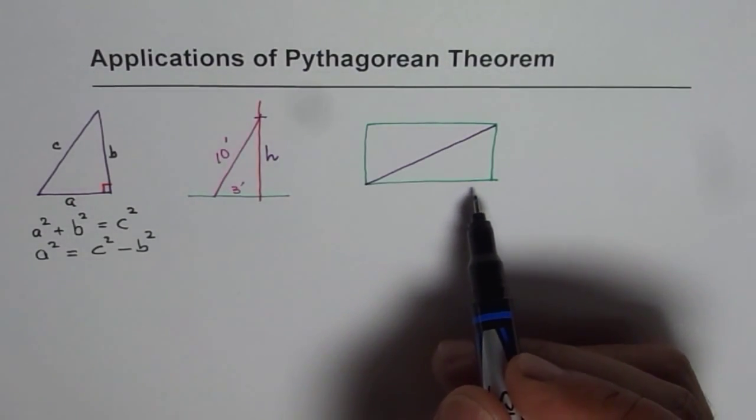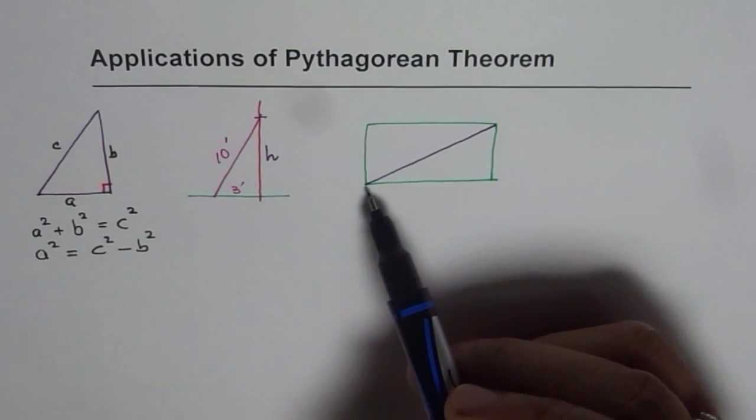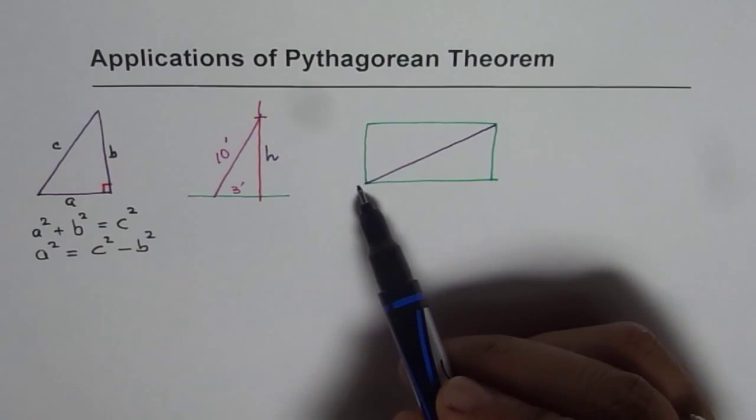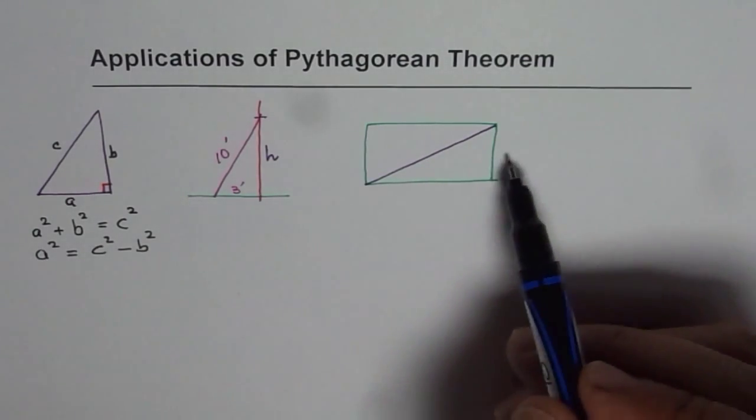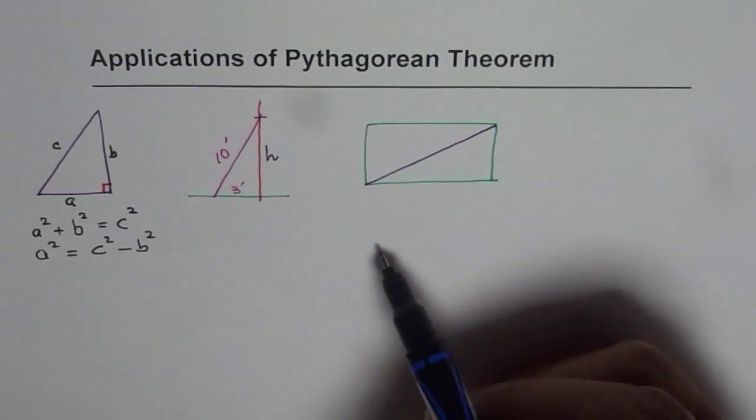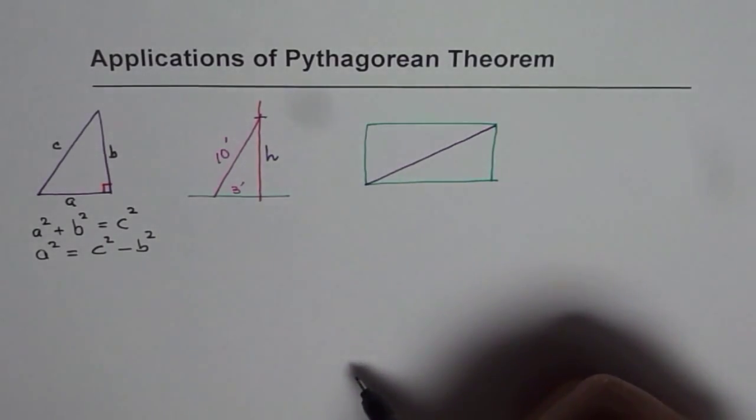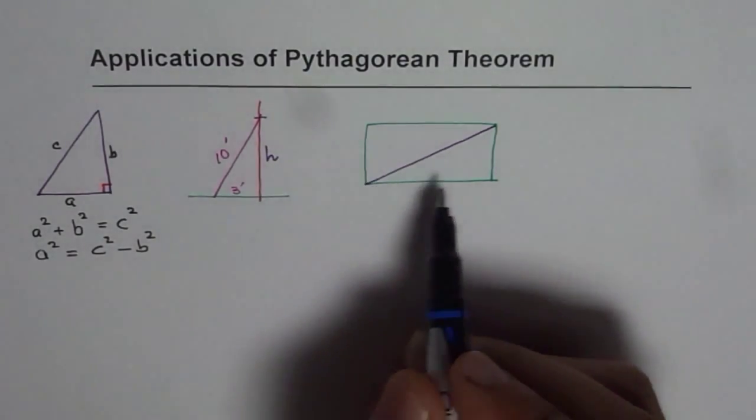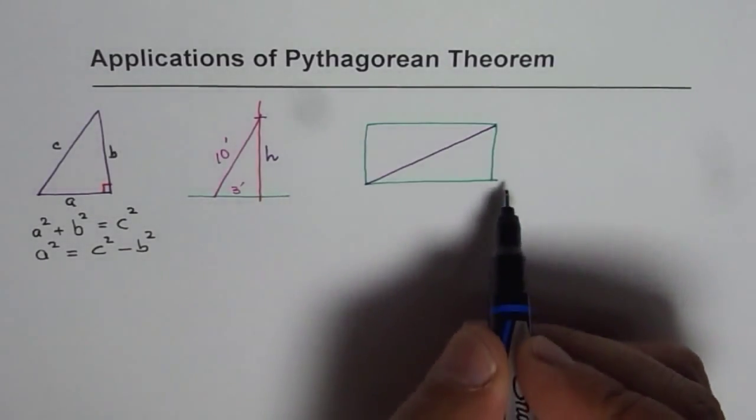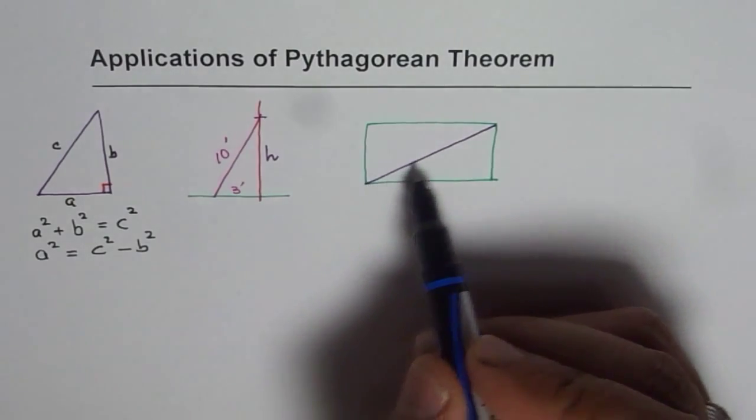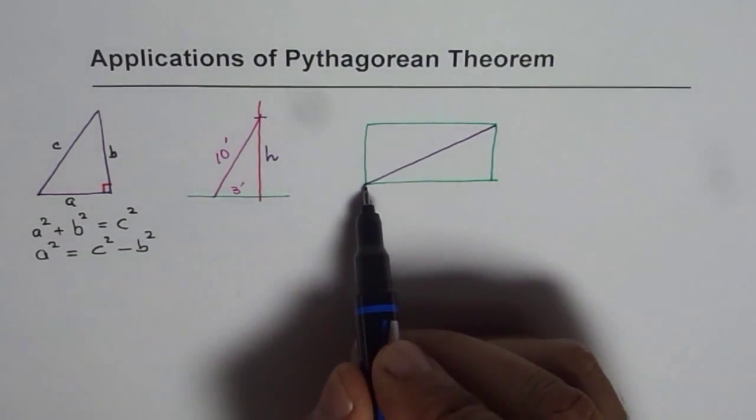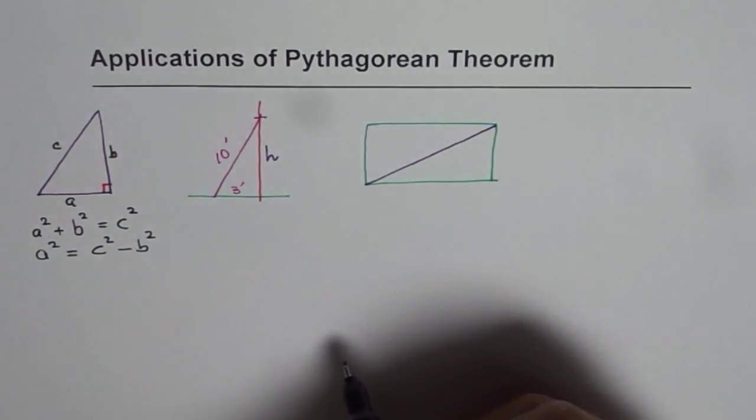TV screens, for example, they are sold by the diagonal length of their screen. So you can find length and width knowing the diagonal and the ratio of length and width. At times we could have a problem saying how much distance will you save if you go across a park diagonally rather than walking along the sides.